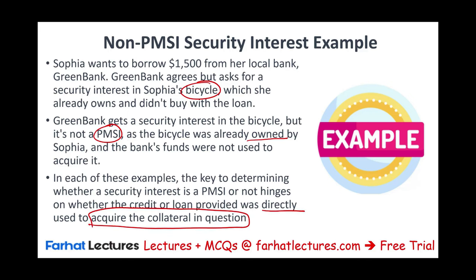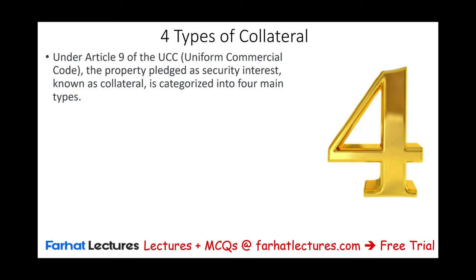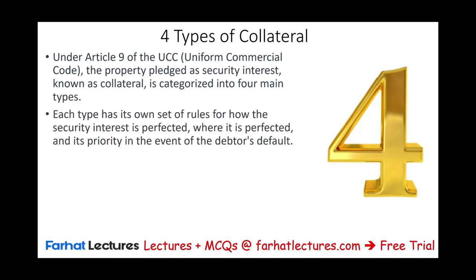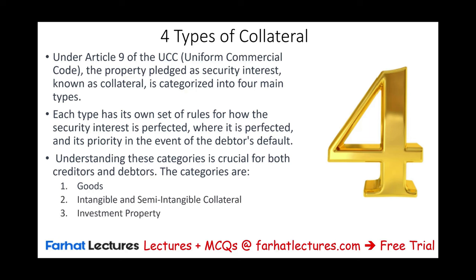There are four types of collateral under Article 9 of the UCC. The property pledged as a security interest is categorized into four main categories, each with its own rules for how the security interest is perfected and how priority is determined in the event of debtor default. Understanding these four categories is crucial for both creditors and debtors.